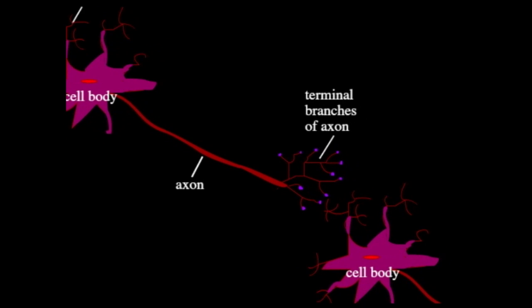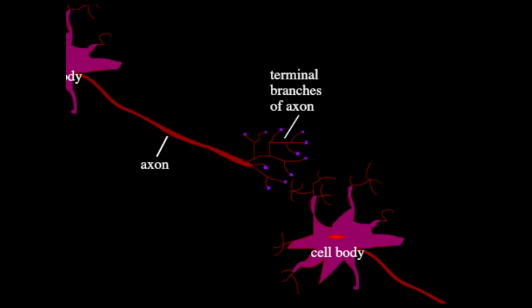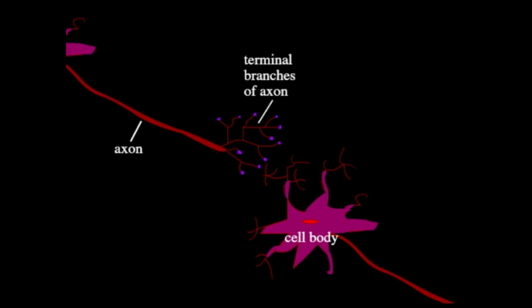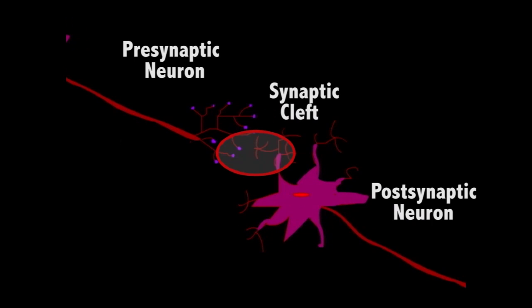This is an animation tutorial for synaptic transmission. Synaptic transmission takes place in the presynaptic neuron, synaptic cleft, and the postsynaptic neuron.